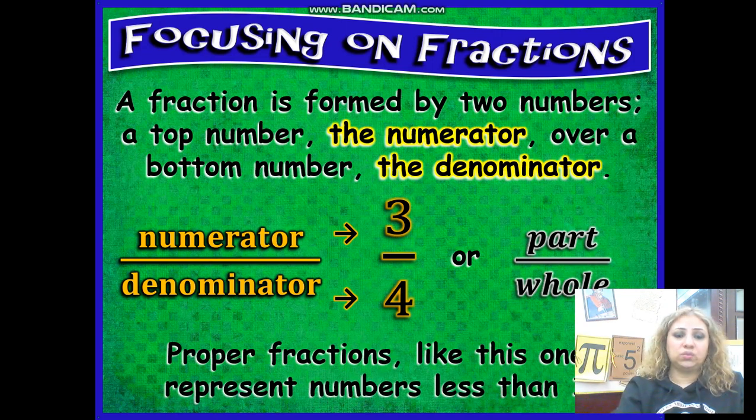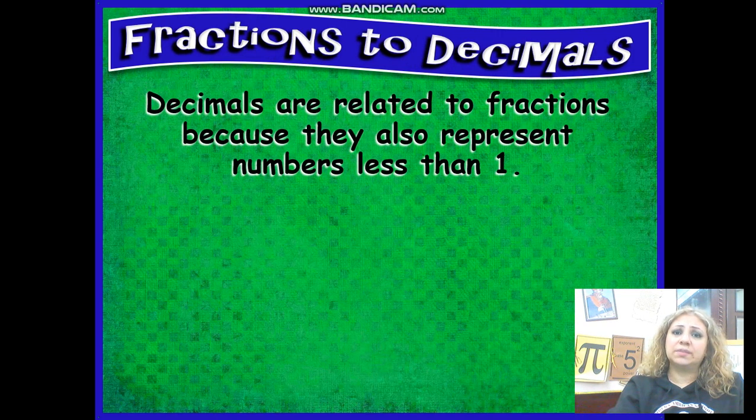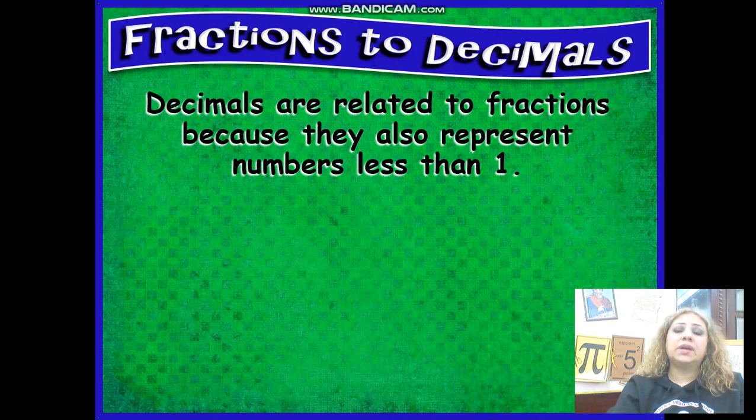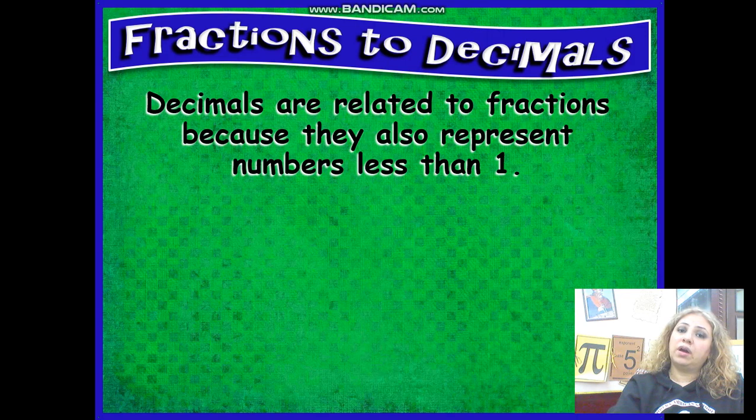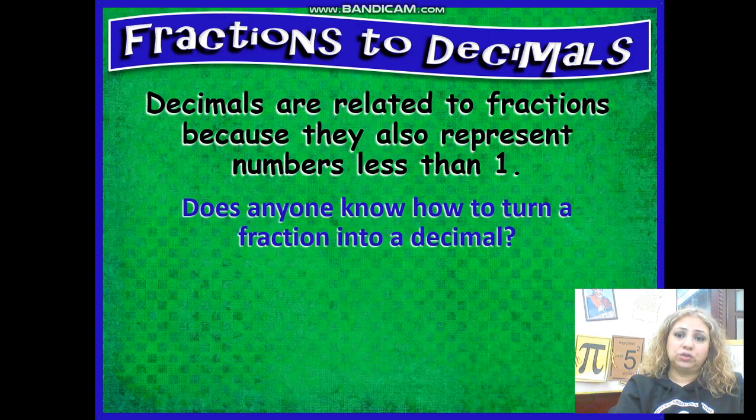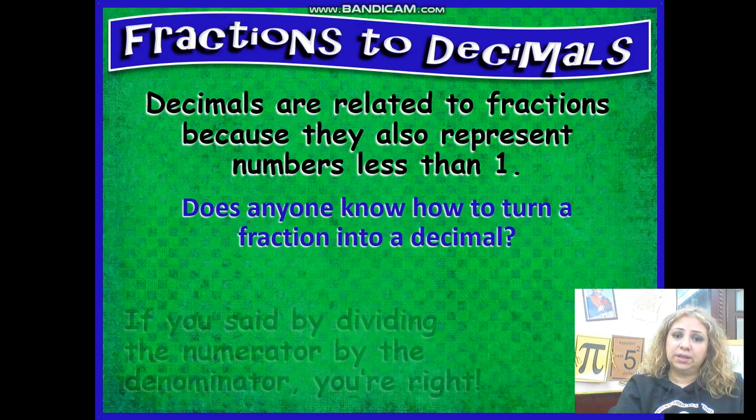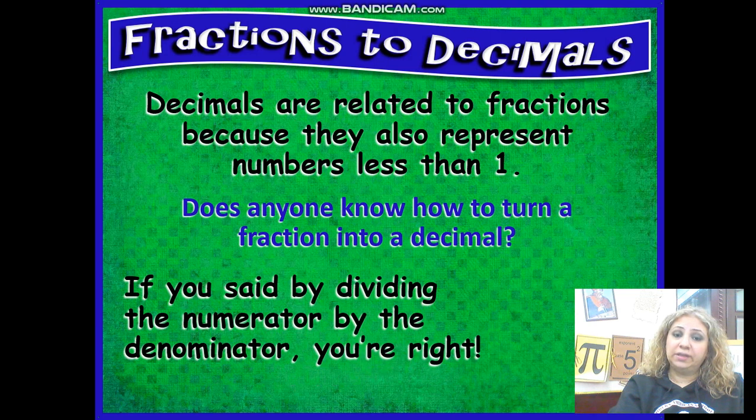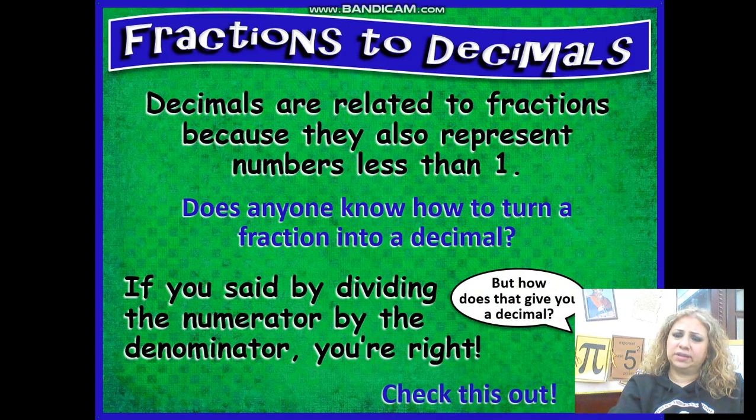Proper fractions like this one represent numbers less than one. Decimals are related to fractions because they also represent numbers less than one. So they both represent the same amount but in different ways. Does anyone know how to turn a fraction into a decimal? You said by dividing the numerator by the denominator, you are right of course. But how does this give a decimal? Check this out.